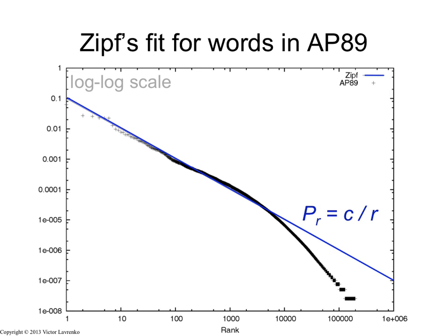So on the y-axis I have the actual probabilities, on the x-axis I have the ranks, and Zipf's law tells me that the probability is going to be a certain constant divided by the rank. That's what the blue line is. And you see that the data falls quite nicely on that line for a whole range of words.